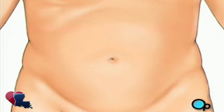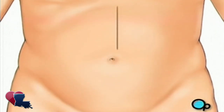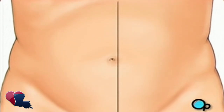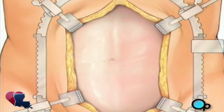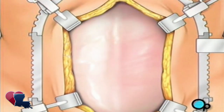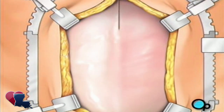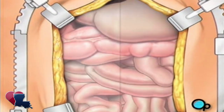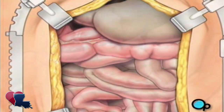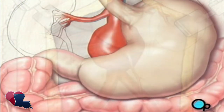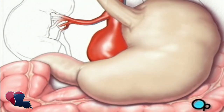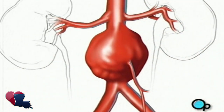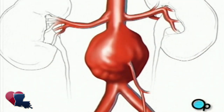After you are unconscious, your doctor will make a vertical incision down the center of your abdomen. Skin and other tissue will be pulled back to expose the abdominal muscles. Your doctor will carefully divide the muscle to expose the abdominal cavity. A special instrument called a retractor will be used to hold the chest open. Once your doctor has a clear view of the abdomen, he or she will gently pull the intestines up and out of the way, revealing the aorta and the aneurysm.